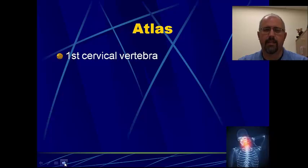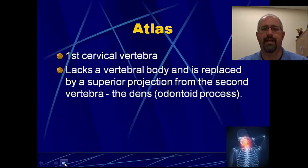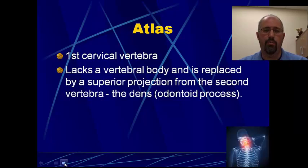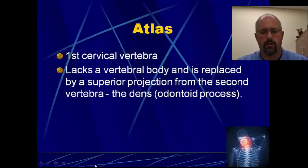The atlas — number one, the first cervical vertebrae. Why is it called the atlas? Mythology. Atlas was the guy that stood with the world on his shoulders. So your first cervical vertebrae sits with your head on its shoulders — that's why it's called the atlas. The atlas itself has got no vertebral body, and so the space where the vertebral body should be is actually just an opening. It's a ring of bone — not what we normally think of with the body and then the transverse processes and the spinous processes.